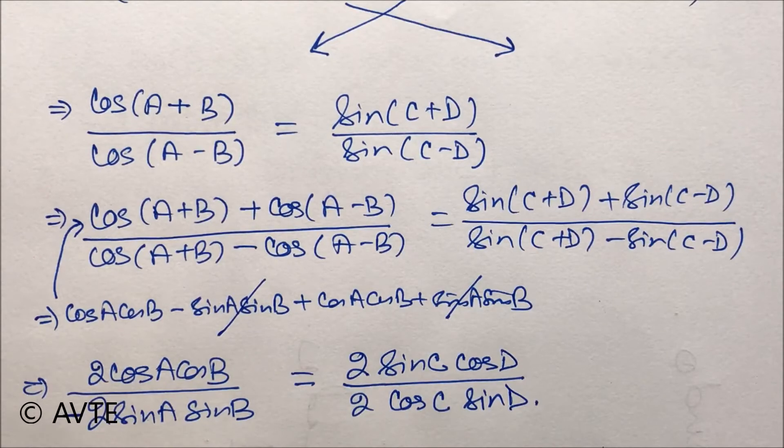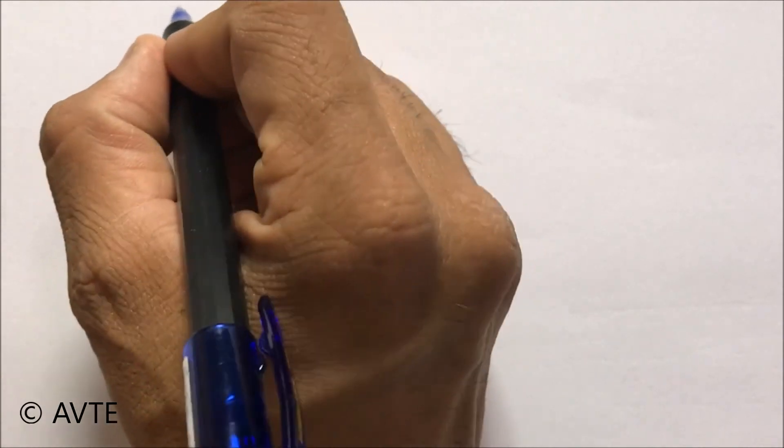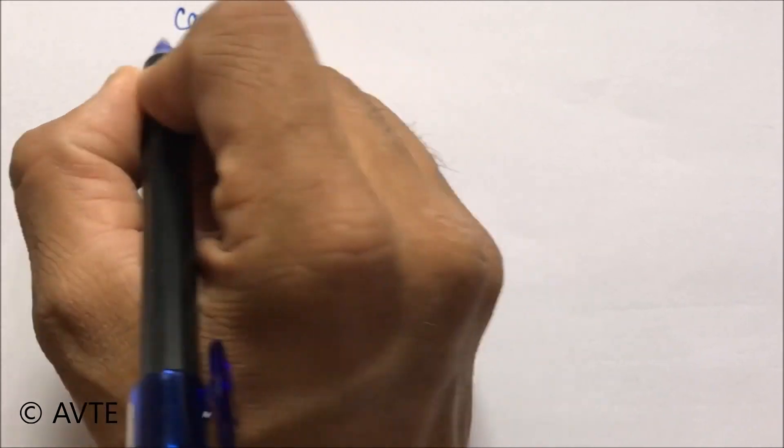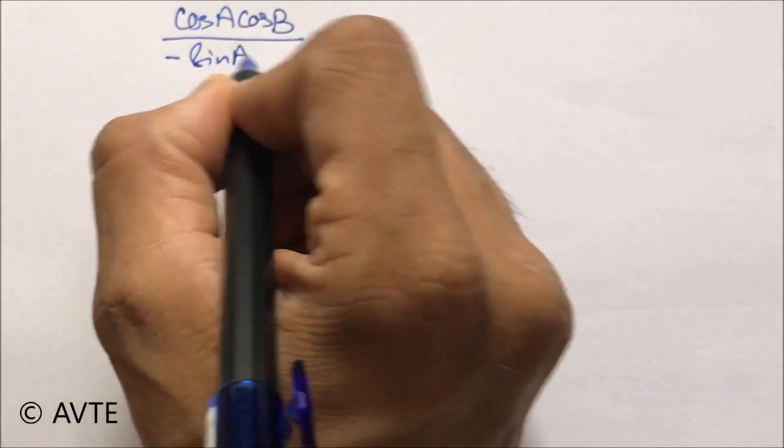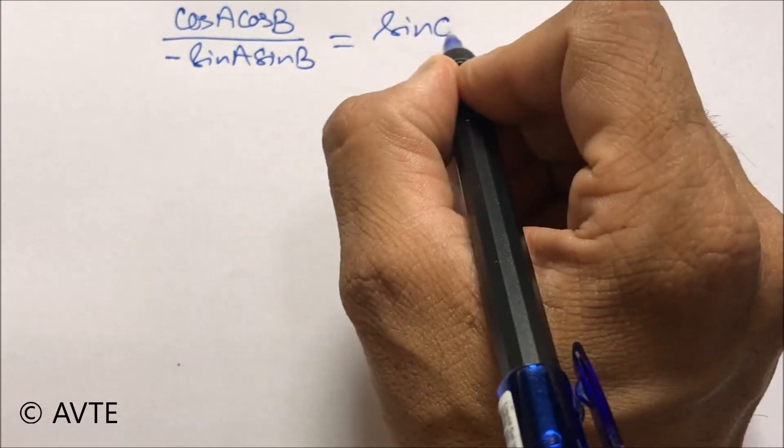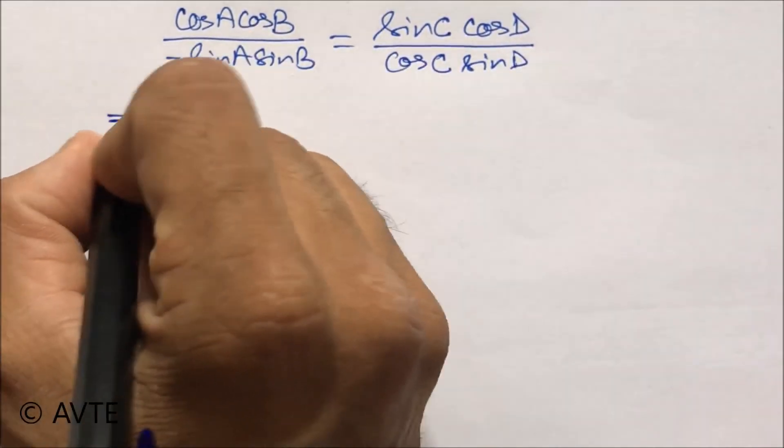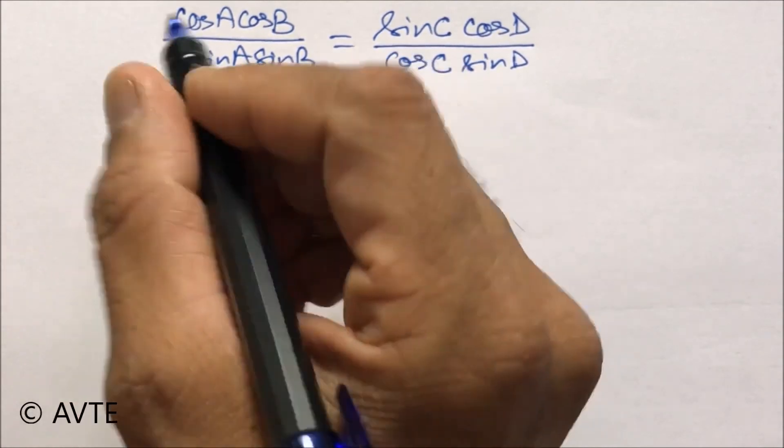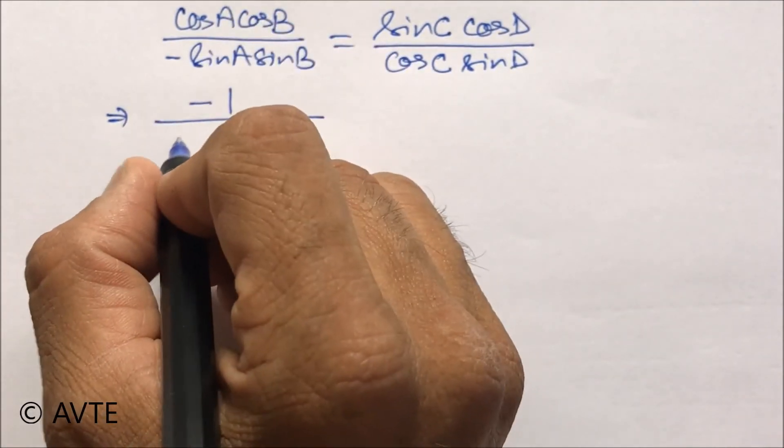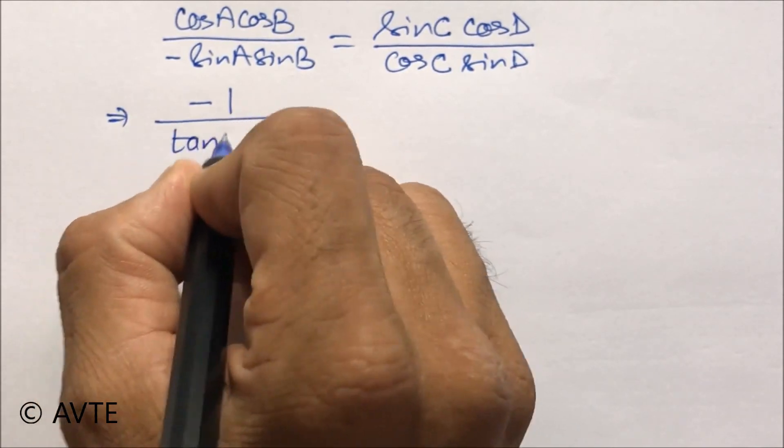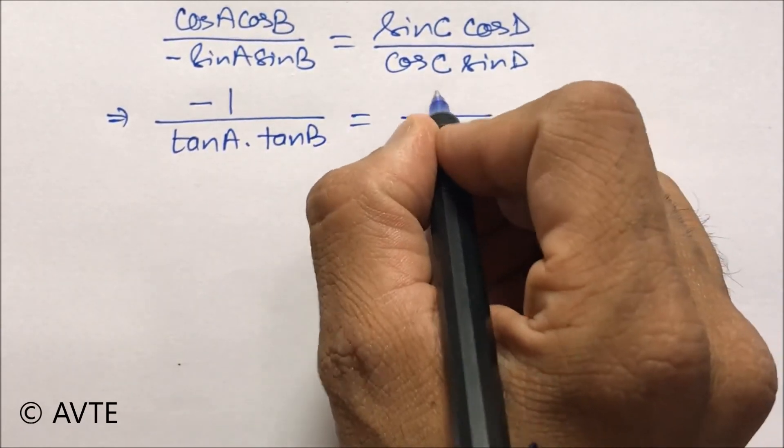Now we can cancel 2 from everywhere. You can see that because we need everything in tan, so it is becoming 1 upon tan A. After when you cancel 2, we'll be left with cos A cos B, and the other side is sin C cos D. Since we need tan, we are now putting cos A by sin A as 1 by tan A, so it is minus 1 upon tan A into tan B, and the other side is tan C upon tan D.